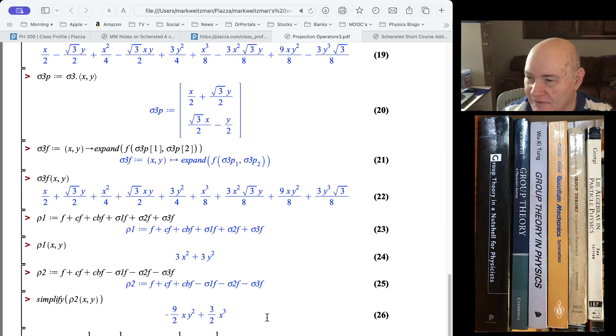And you get 3x squared plus 3y squared. And obviously, this thing is invariant under all the group operators, as we expect, because x squared plus y squared is just the distance from the origin.